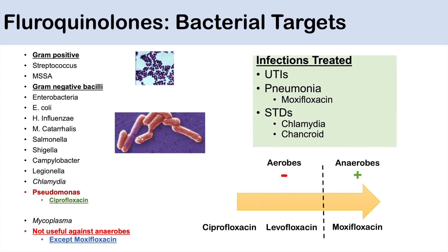Some infections we can treat with fluoroquinolones include UTIs, because the majority of UTIs are caused by gram-negative rods. In antibiotic stewardship, we want to use the lowest and most narrow-spectrum antibiotic possible. So we would use Ciprofloxacin for UTIs rather than Moxifloxacin, using the earliest generation that covers the target organism.